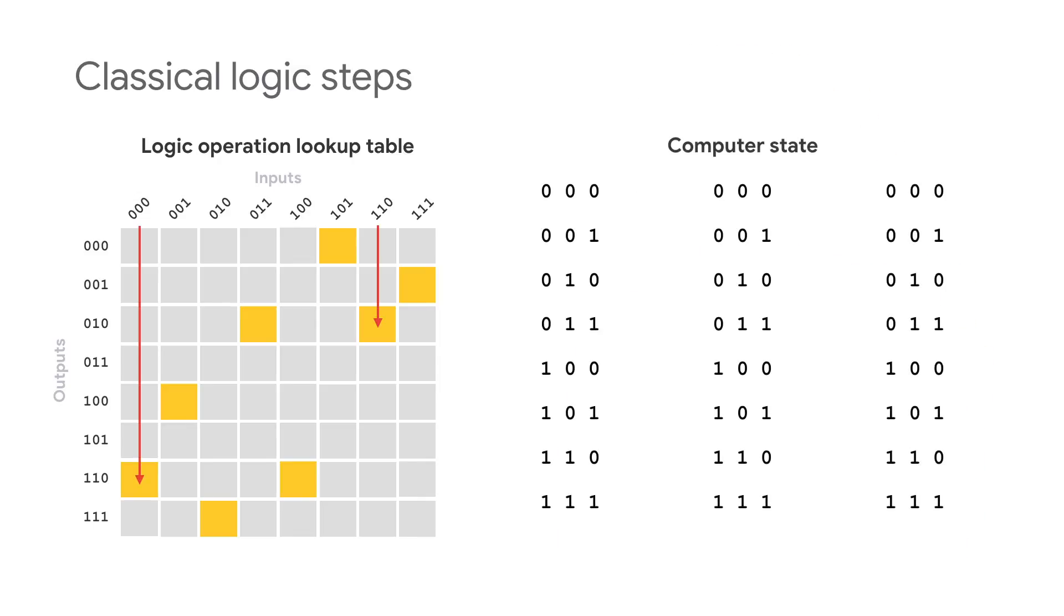For example, the logic operation shown here takes the state 000 to 110. If we were to apply the same operation again, we'd go from 110 to 010.